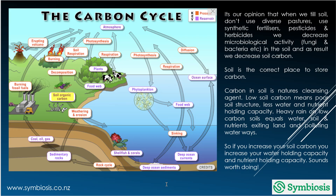One of the key things is building carbon in your soil. This shows the carbon cycle and where soil organic carbon fits in. One of the first things we do is try not to till the soil if possible. From Symbiosis' perspective, when we till the soil, use synthetic fertilizers, pesticides and herbicides, we decrease microbiological activity — fungi and bacteria — and as a result we decrease soil carbon.